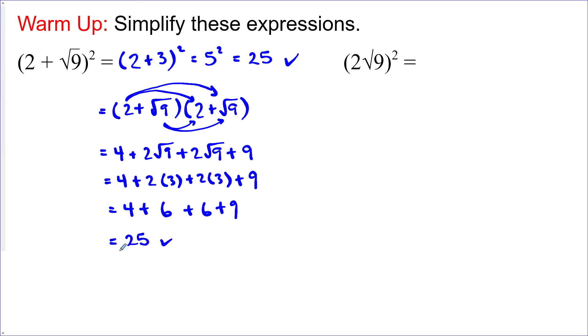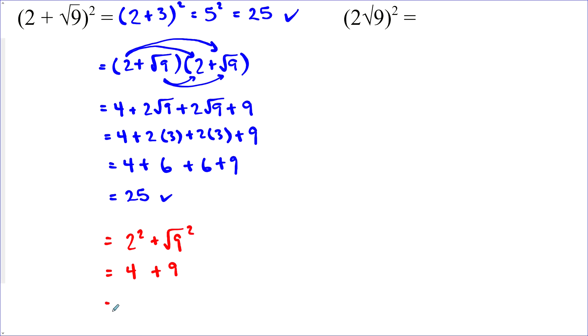Now there's a really common mistake that I see students doing, and that is just squaring the individual terms. So let's see if that would work. This would be two squared and then the square root of nine squared. So when we do that, we get four plus nine, and you can see that this does not work.